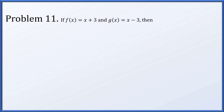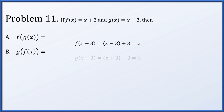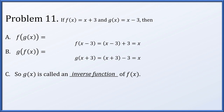Problem 11: if f of x is x plus 3 and g of x is x minus 3, then f of g of x: plug x minus 3 into f, and the plus and minus 3 cancel, giving x. Similarly, g of f of x: plug x plus 3 into g, and again the 3s cancel, giving x. Since both compositions in either order produce the identity function x, g of x is the inverse function of f of x. This is the definition of two functions being inverses: their composition in either order produces the identity.